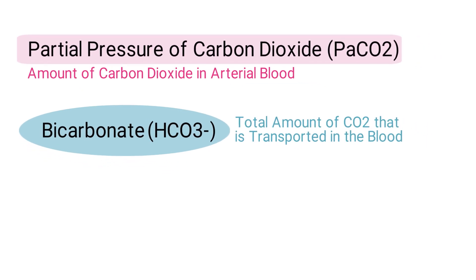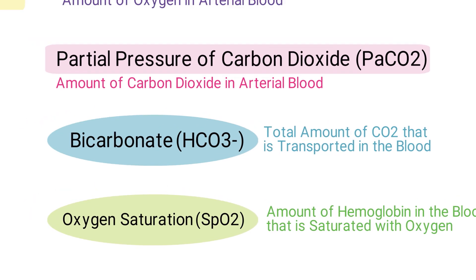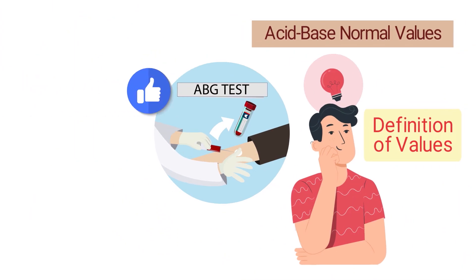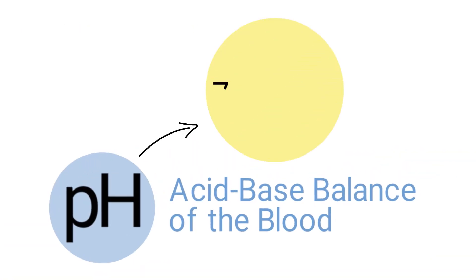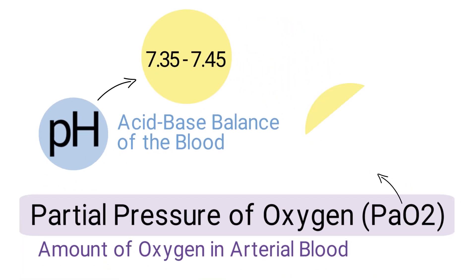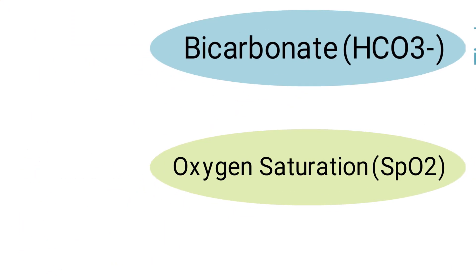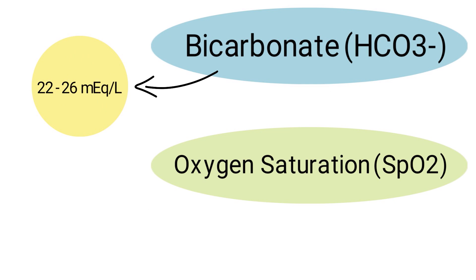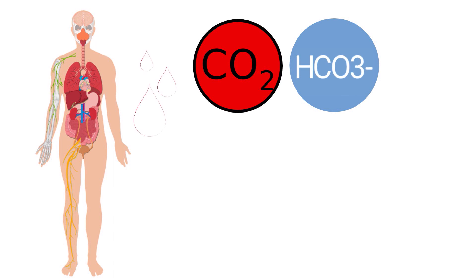Bicarbonate, or HCO3, refers to the total amount of CO2 that is transported in the blood. Oxygen saturation, or SpO2, refers to the amount of hemoglobin in the blood that is saturated with oxygen. After an arterial blood sample is collected, it should be analyzed and interpreted by the practitioner. Normal acid-base results should fall within the following ranges: pH 7.35–7.45, PaO2 75–100, PaCO2 35–45, bicarbonate 22–26, and oxygen saturation 94–100.